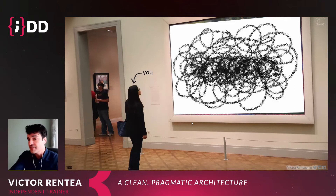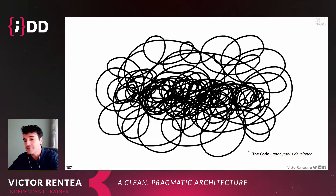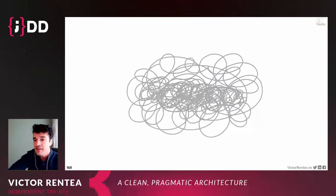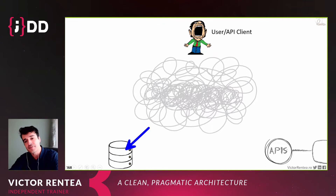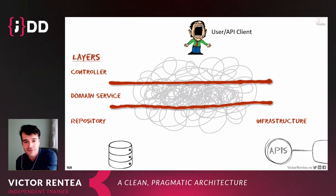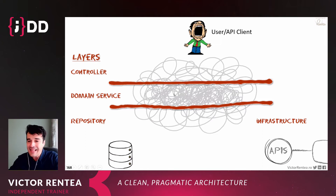Now let's look at some code. This painting represents the perception of code from an anonymous developer — this is what code looks like if you don't enforce any structure or boundaries. Let's put some boundaries on it. On the top, imagine your API exposed to a browser, microservice, or mobile app. Your database is at the bottom, along with APIs you interact with from other applications. We impose layers. Most Java applications today have controllers, services, and repositories — that's the ubiquitous architecture.